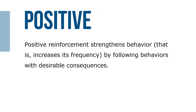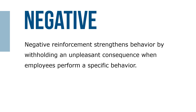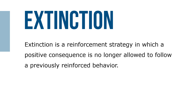Positive reinforcement strengthens behavior — that is, increases its frequency — by following behaviors with desirable consequences. Negative reinforcement strengthens behavior by withholding an unpleasant consequence when employees perform a specific behavior. Negative reinforcement is also called avoidance learning because workers perform a behavior to avoid a negative consequence. Extinction is a reinforcement strategy in which a positive consequence is no longer allowed to follow a previously reinforced behavior. By removing the positive consequence, extinction weakens the behavior, making it less likely to occur.